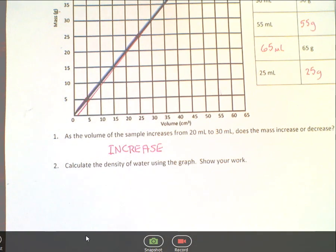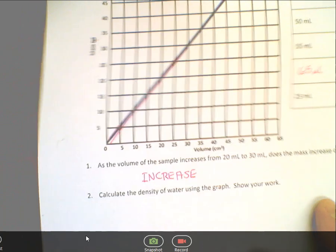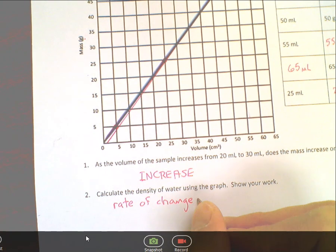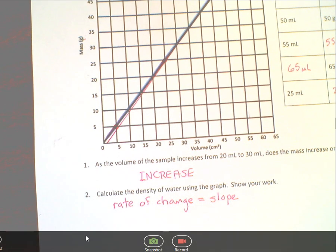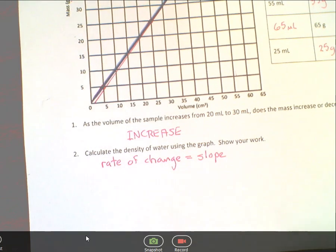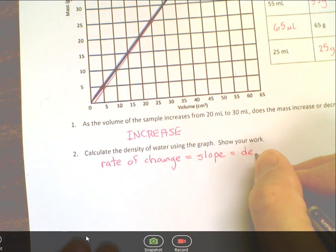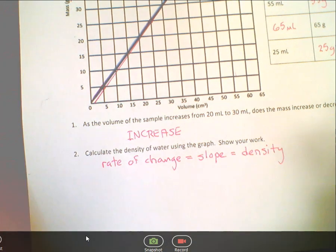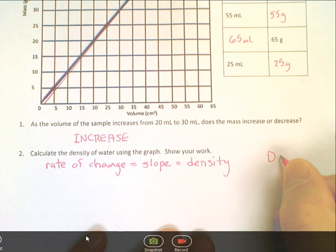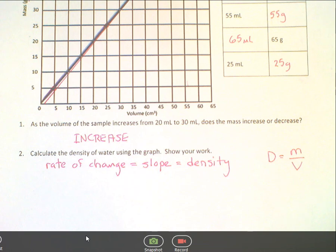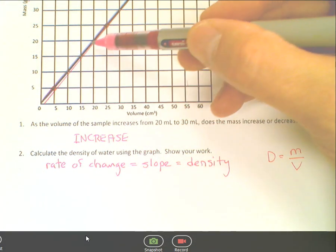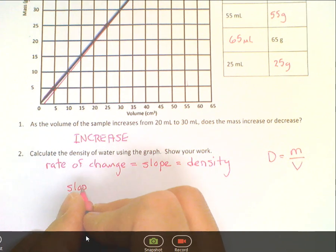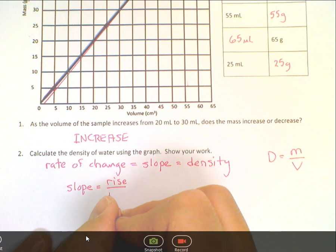So the next part says, calculate the density of water using the graph. So how to do this is we're going to use something called the rate of change. And it's going to be given a name called slope, the slope of the line. And we can calculate it. And the slope will tell us what the density is. In this case, the density is equal to the slope because it's the mass over the volume.